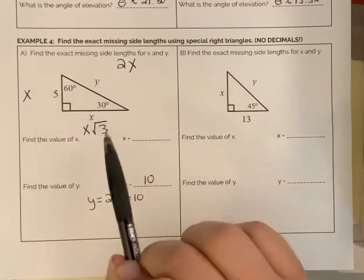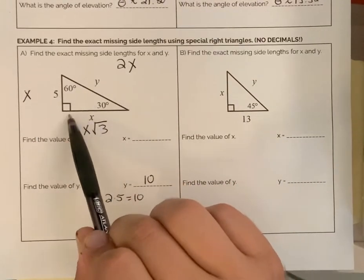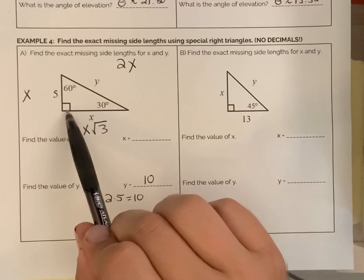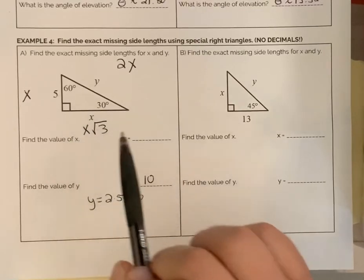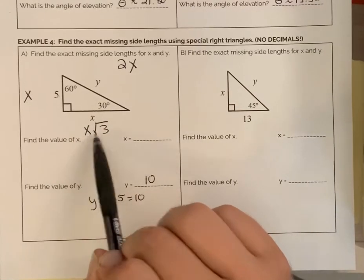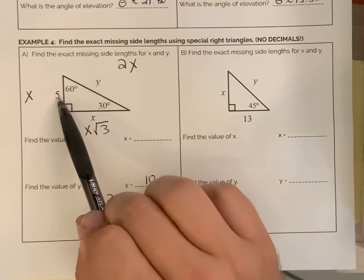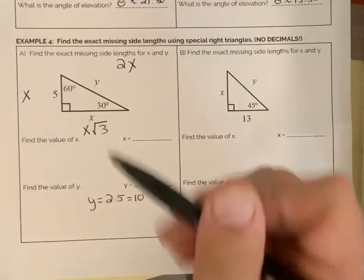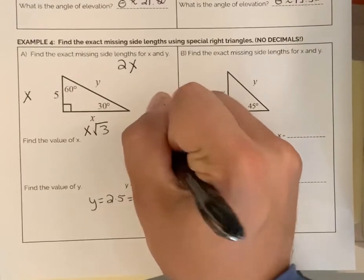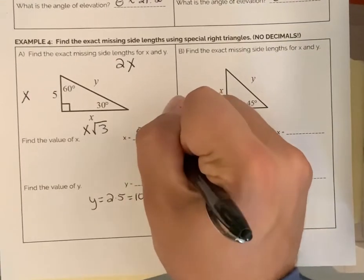Now here, if we're looking at this side x, the longer leg of the triangle, this is equal to x times the square root of 3. Well, remember the shorter side is 5. So this side right here is 5 times the square root of 3.